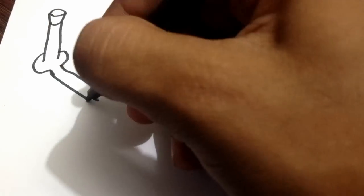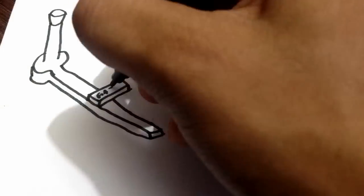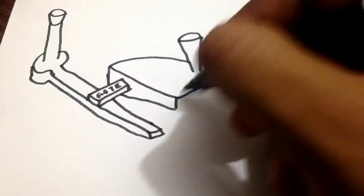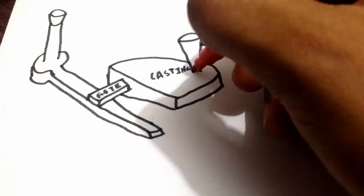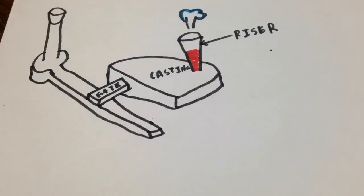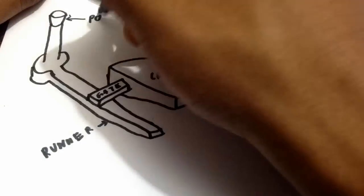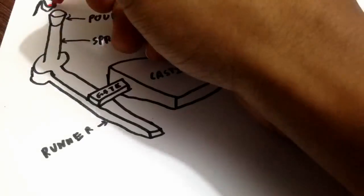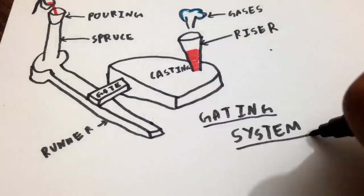After allowances comes the gating system which is the term applied to all channels by which molten metal is delivered to the mould cavity. It consists of pouring cups, sprues, runner, gates etc. A riser is a passage of sand made in the cope to permit the molten metal to rise above the highest point in the casting. It also allows extra gases to escape.